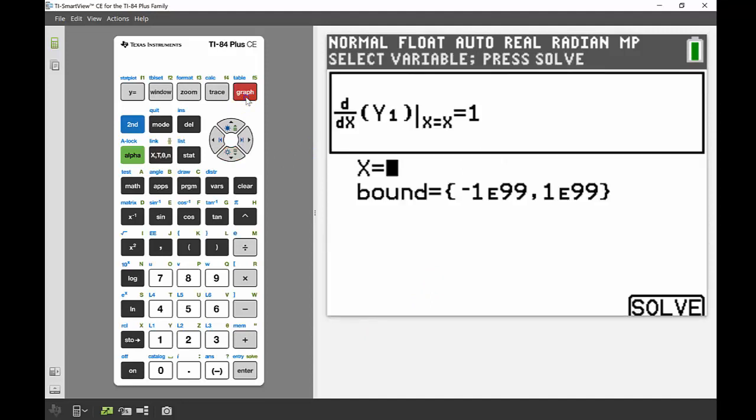I'm pressing my graph button. I can see there derivative equal to 1. That equation looks good to me. I'm solving for x, and I can see there 2.5 is my correct solution for x.